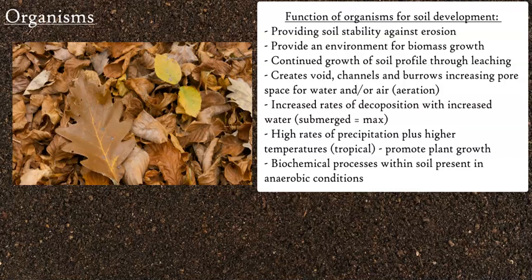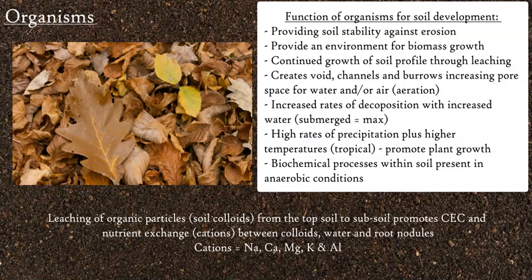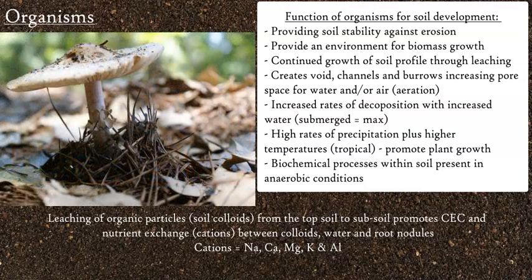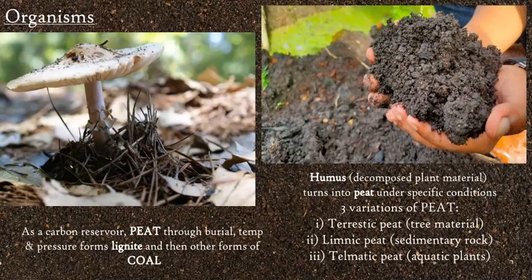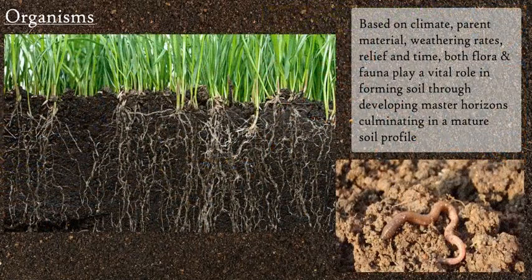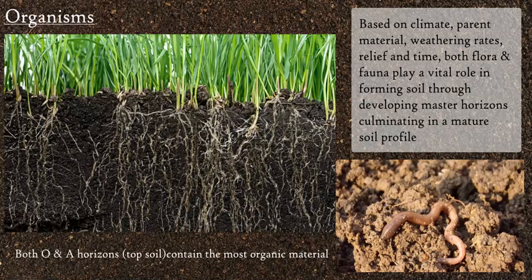The breakdown of organic material creates humus — partly or finely decomposed organic material in the soil — which can be leached down to stimulate soil growth at different horizons (the B, C, and E horizons). This biomass and plant growth adds organic material into the soil through addition, benefiting development into a full mature multi-horizon soil profile. Humus eventually turns into peat — terrestric, limnic, or telematic — and through burial this decomposition creates coal and lignite, storing carbon. This biochemical process under anaerobic conditions is vital in creating a thick, productive, developed soil.